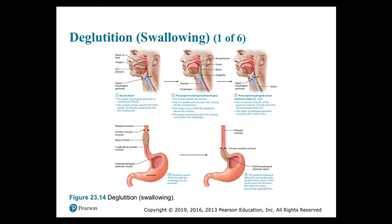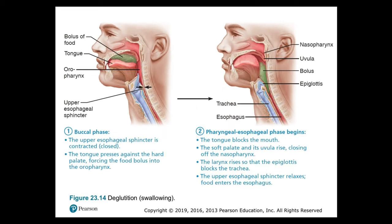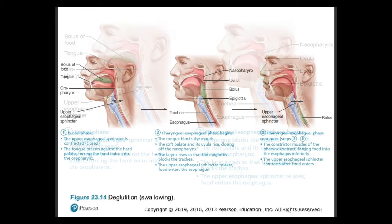Looking at figure 23.14, the steps of swallowing: in step one, the buccal phase, the upper esophageal sphincter is contracted or closed. The tongue forces against the hard palate, pushing the food bolus into the oropharynx. In step two, the pharyngeal-esophageal phase begins when the tongue blocks the mouth. The soft palate and uvula rise, closing off the nasopharynx. The larynx rises so the epiglottis blocks the trachea, and the upper esophageal sphincter relaxes so food enters the esophagus.